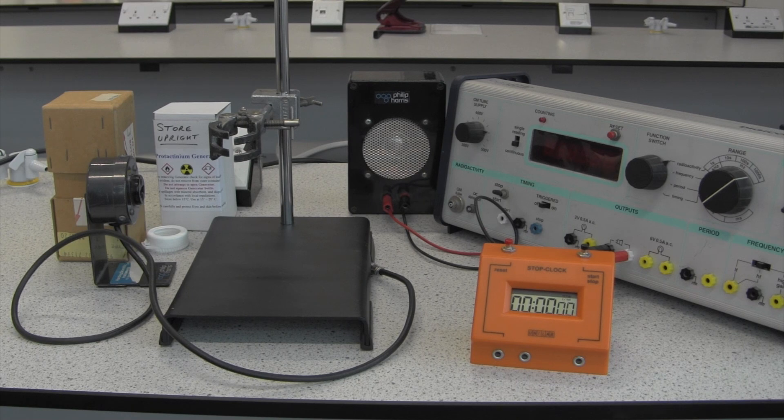The first thing that we need to do is take a measurement of the background radiation. To do this we're going to measure the count rate over a period of time. The time that I'm going to do it for is about two minutes. I've chosen that because it's a decent length of time to get a reasonable average, but not too long so it's going to cause my experiment to take too much time.